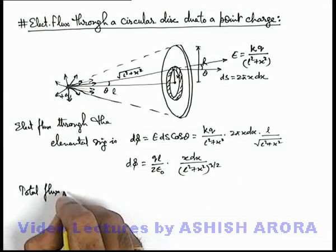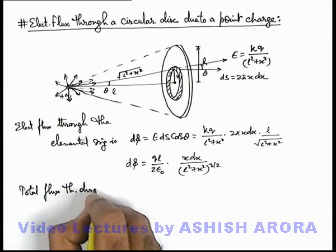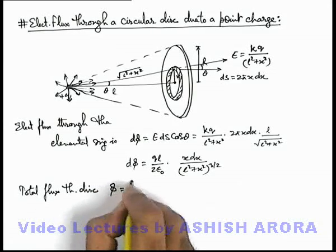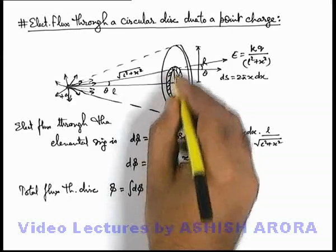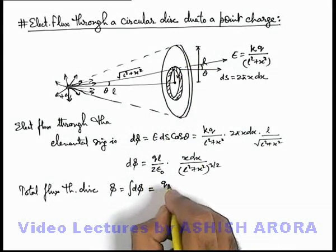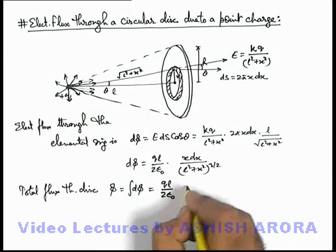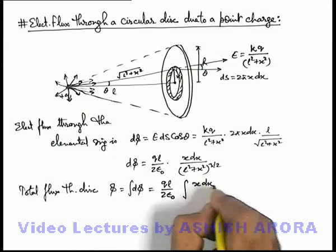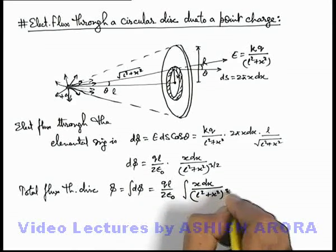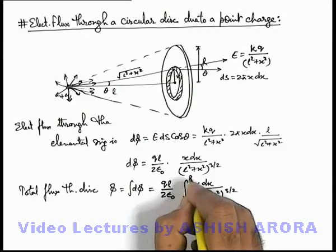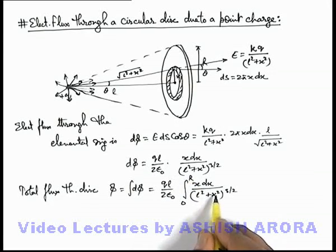Now we can find out total flux through disc by integrating this dφ within limits from zero to r. So here ql by 2 epsilon not is a constant. We integrate x dx by (l square plus x square) to power 3 by 2 from zero to r, which is standard integration.